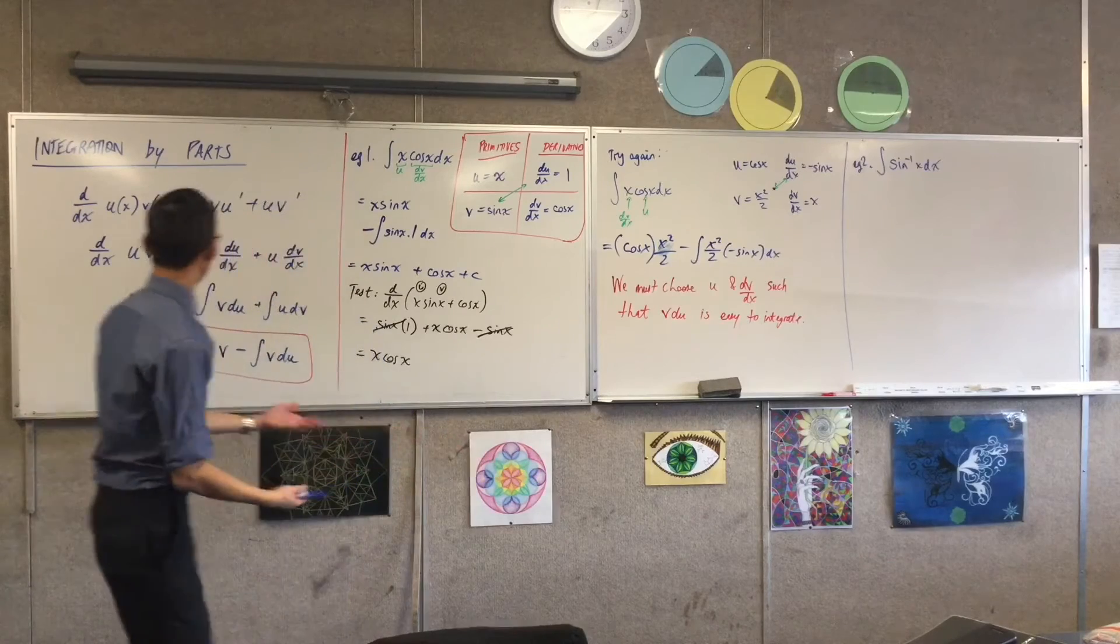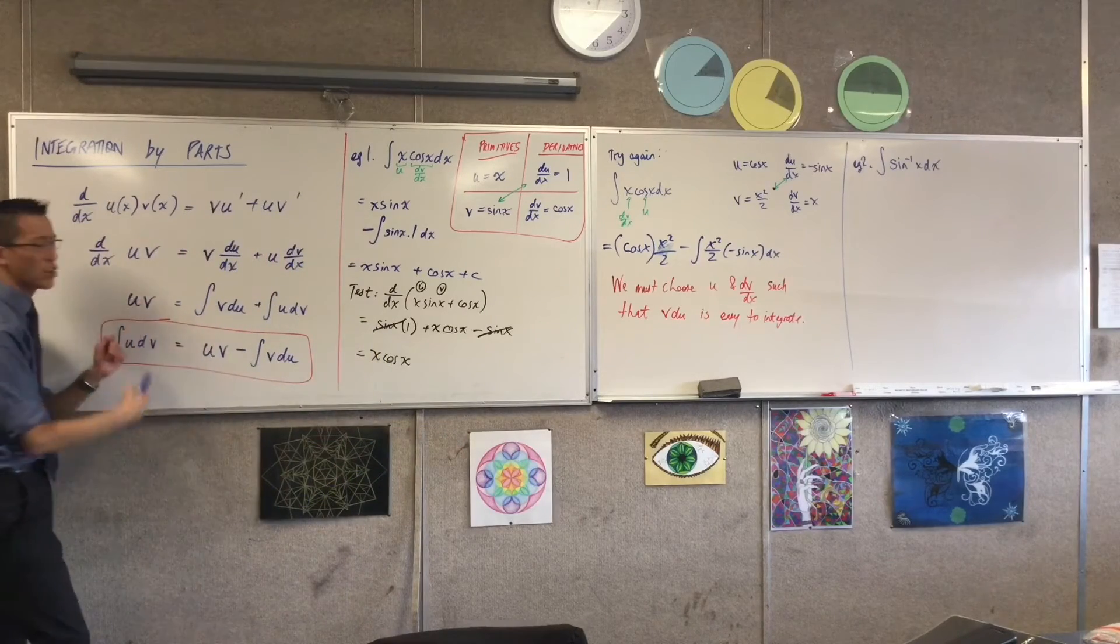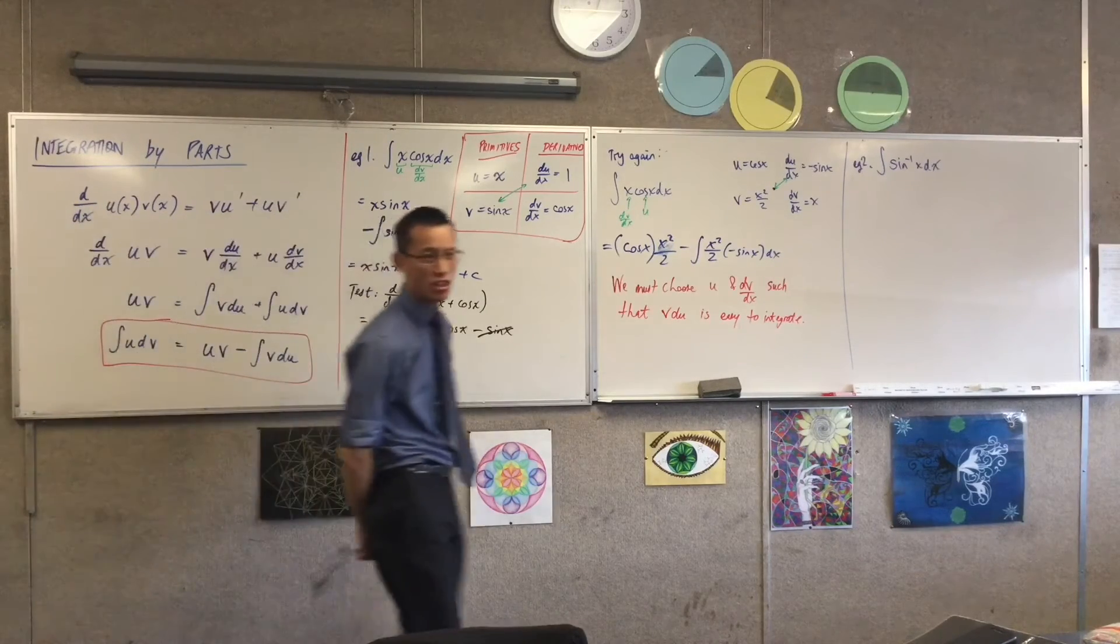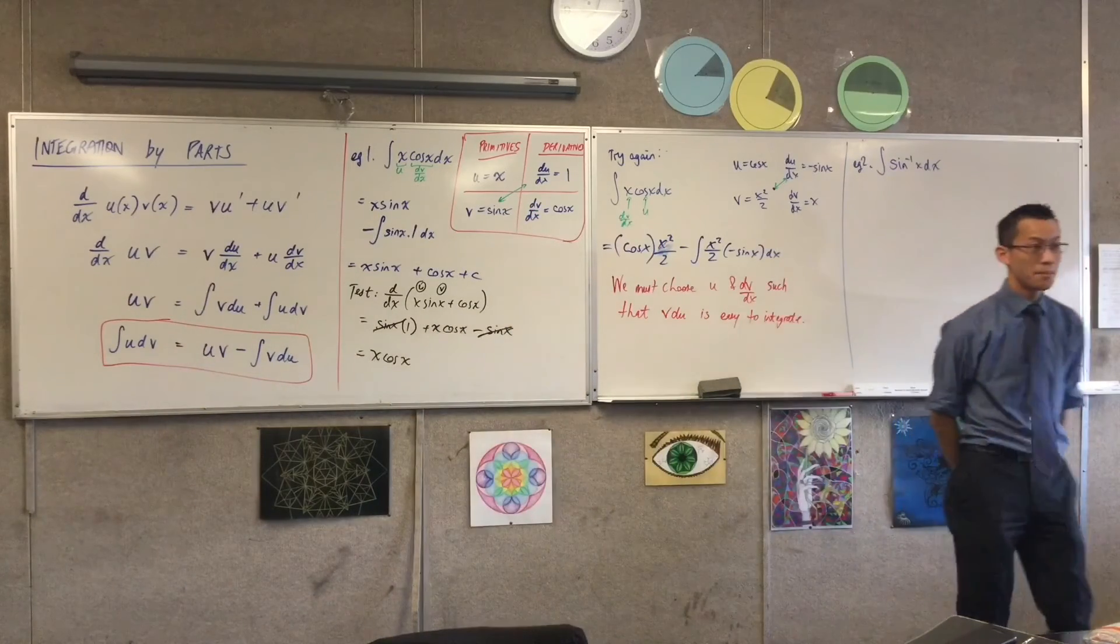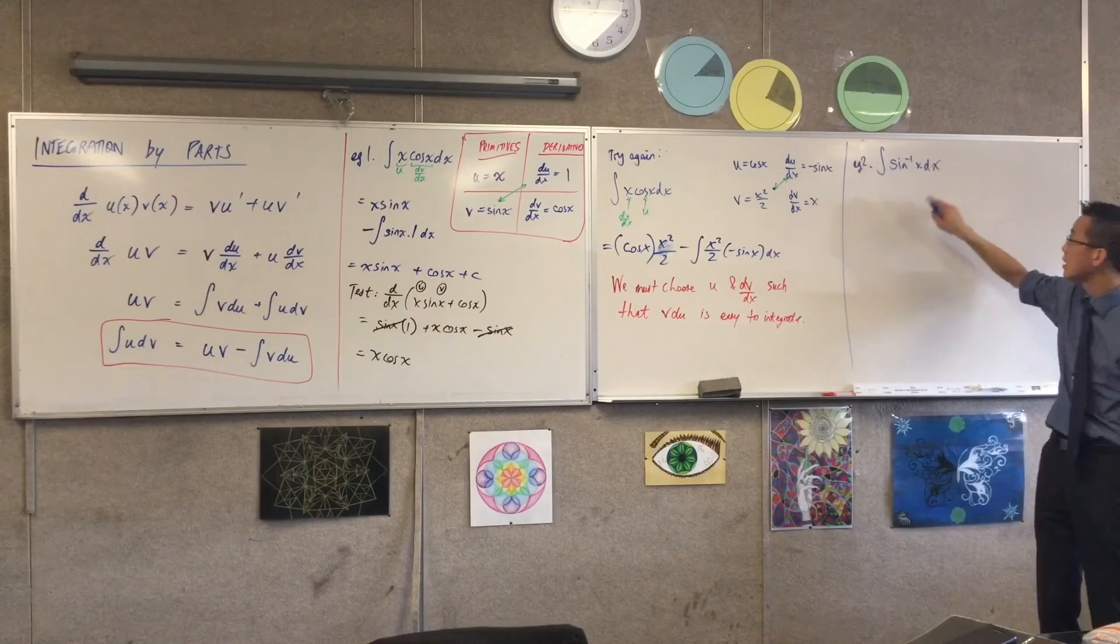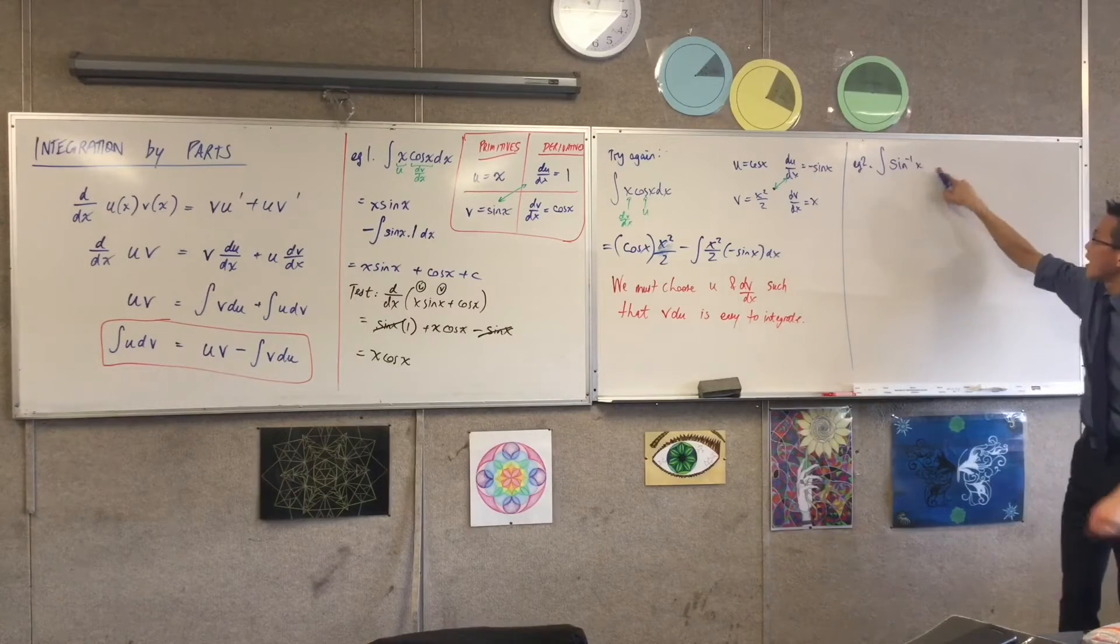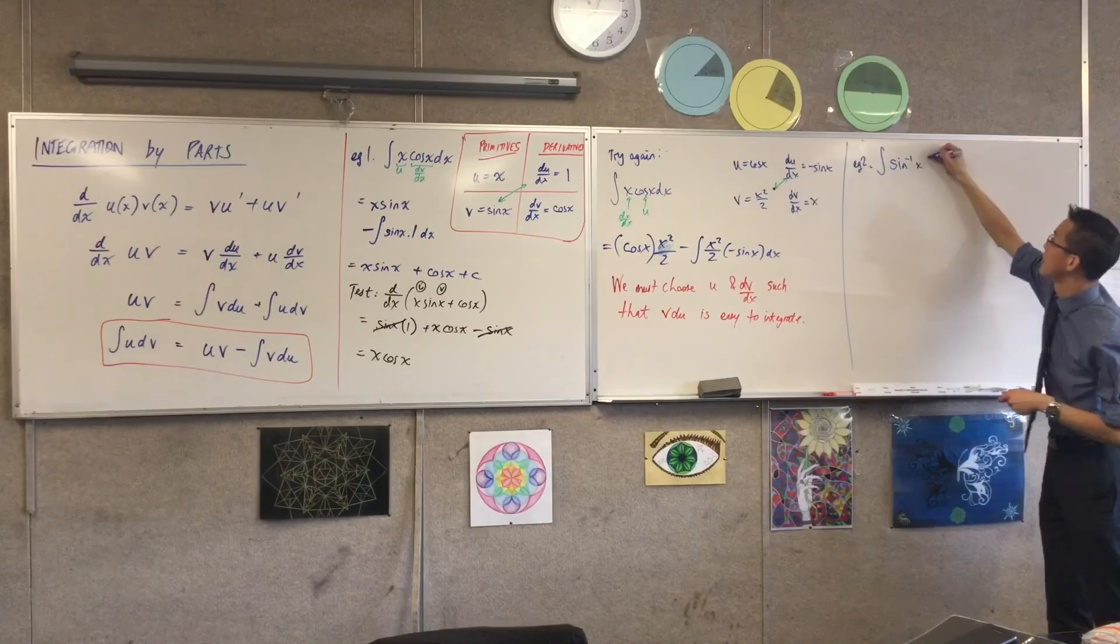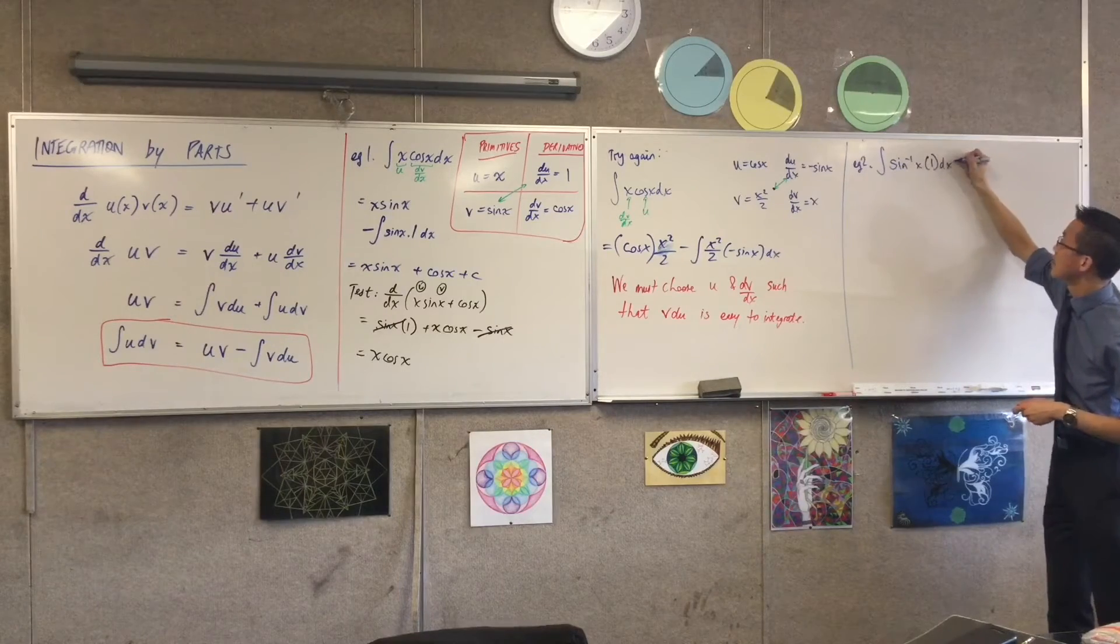Now, remember I said you need to choose a u and a dv/dx. And it looks kind of like you don't have many options. But there is an option, right? There is actually a product hidden in here. And I've used this every time I've done a substitution. This is sine inverse times one.